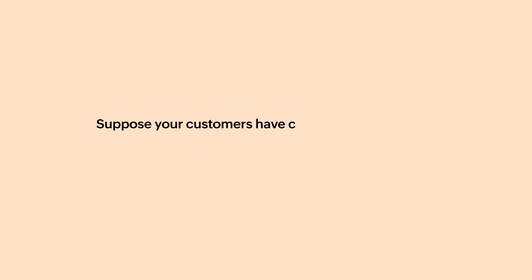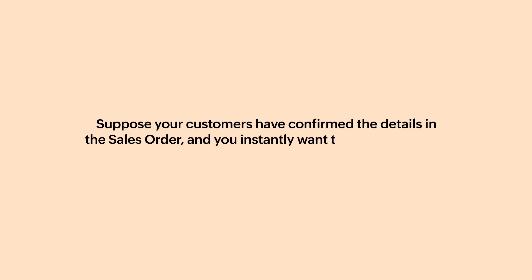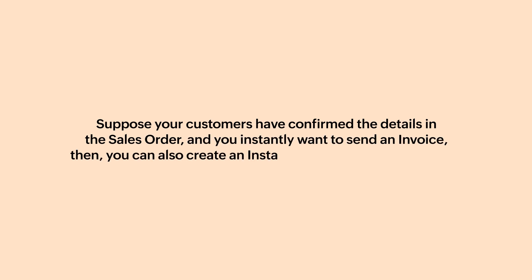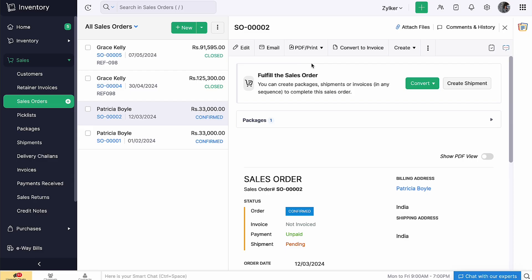Suppose your customers have confirmed the details in the sales order and you instantly want to send an invoice — you can also create an instant invoice from the sales order. To create an instant invoice, open the sales order, click the drop-down next to 'Create' and select 'Instant Invoice'.